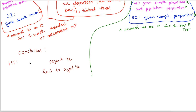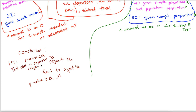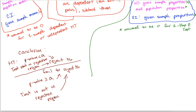Properly stating your conclusion is probably the easiest way to get a bunch of points. For hypothesis testing there are only two options: reject the null hypothesis or fail to reject the null hypothesis. Using the p-value method: if p-value is less than alpha, reject the null; if p-value is greater than or equal to alpha, fail to reject. Using the classical method: if the test statistic is in the rejection region, reject the null; if not, fail to reject.